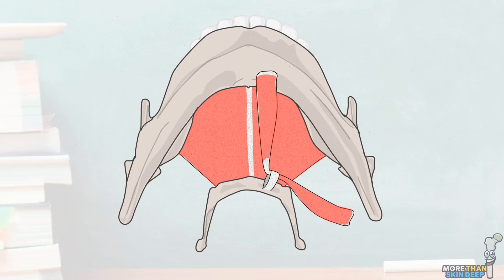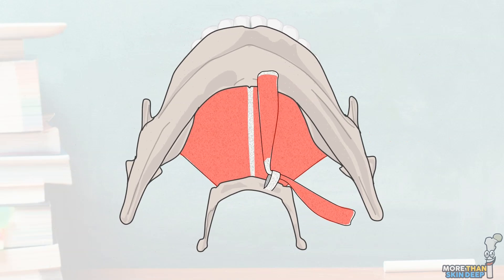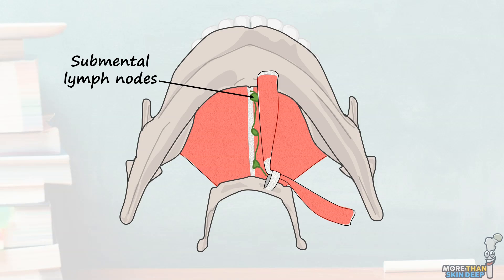There are usually around three small lymph nodes within the submental triangle, helpfully known as the submental nodes, which eventually drain into the deep lateral cervical nodes in the neck.